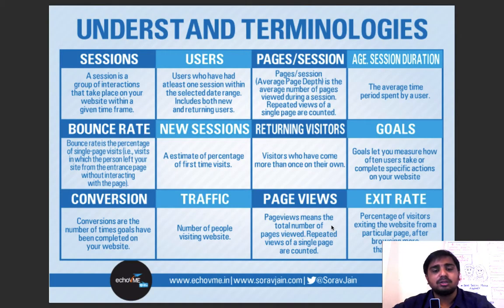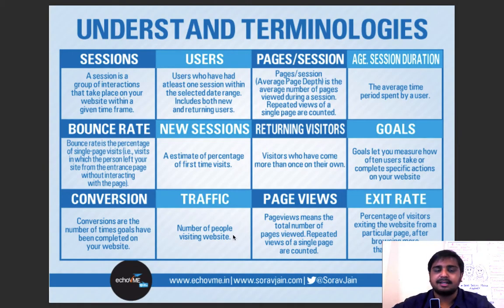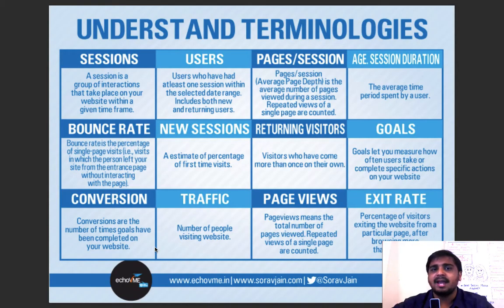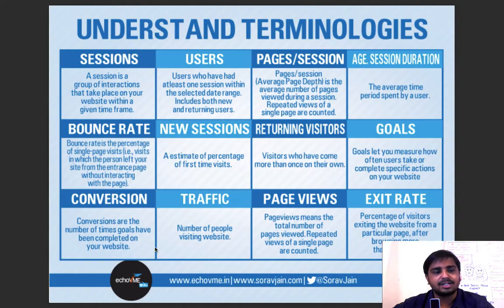Page views means the total number of pages viewed — repeated views of a single page are also counted, so a single user can have hundreds of page views. Traffic is simply the number of people visiting your website. Conversions are the number of times goals have been achieved. Your goals can be anything on Google Analytics — someone who fills a form, someone who visits a specific page, someone who spends two minutes — it's your choice what you set as a goal. Goals let you measure how often users achieve what you want them to achieve.